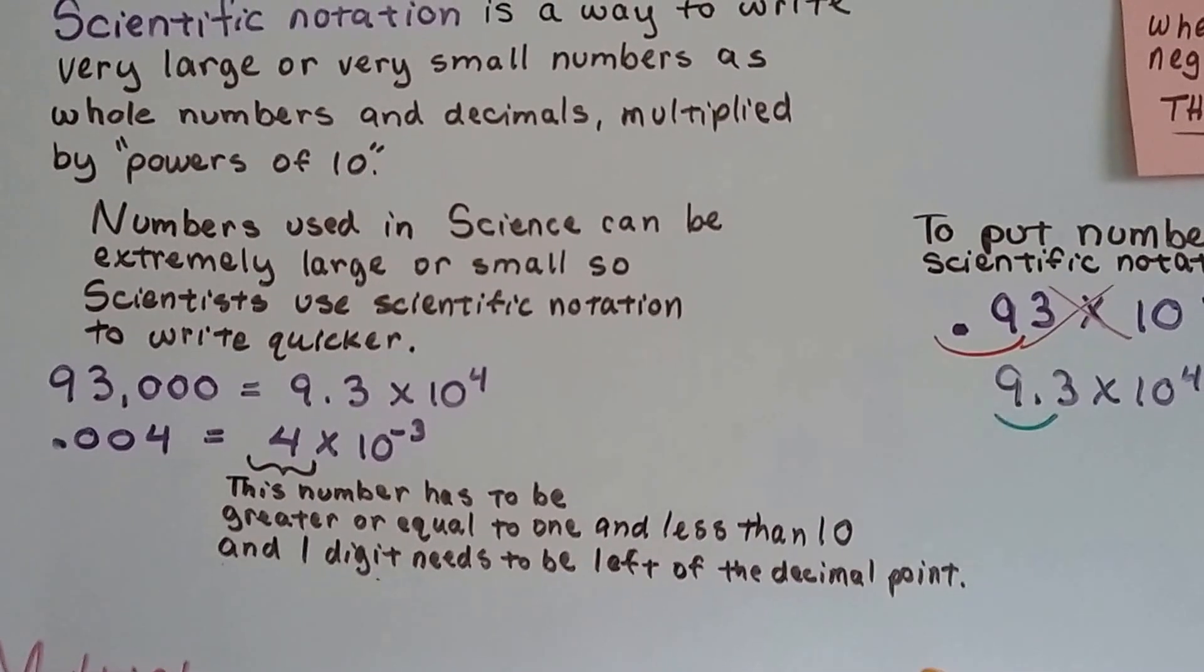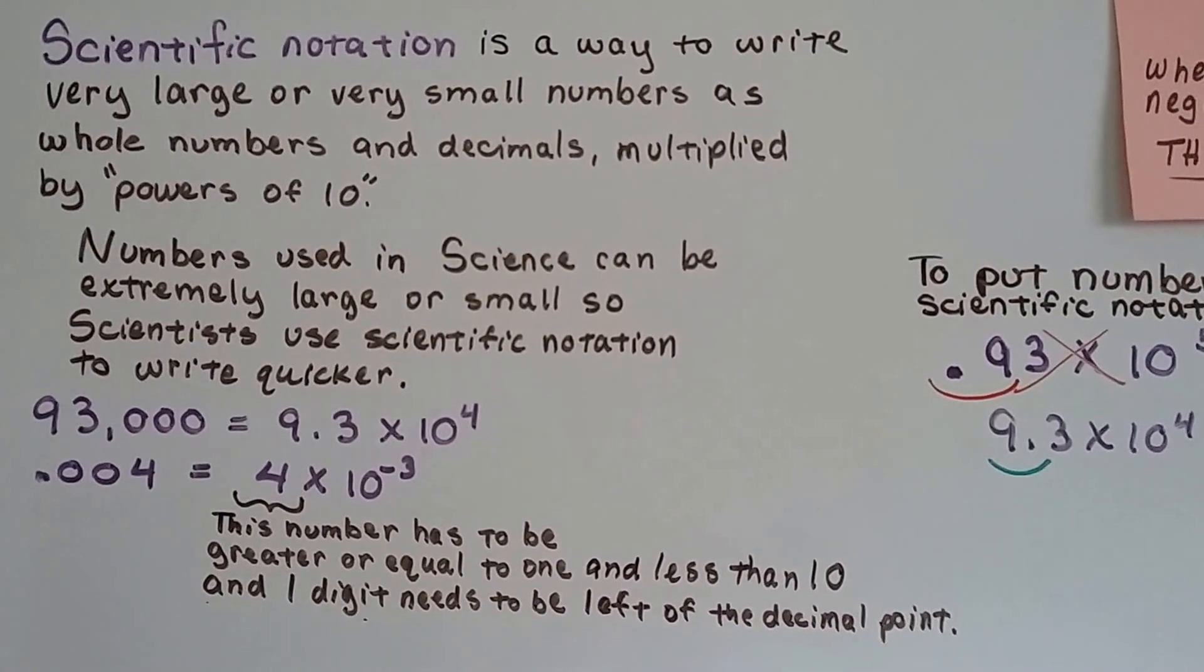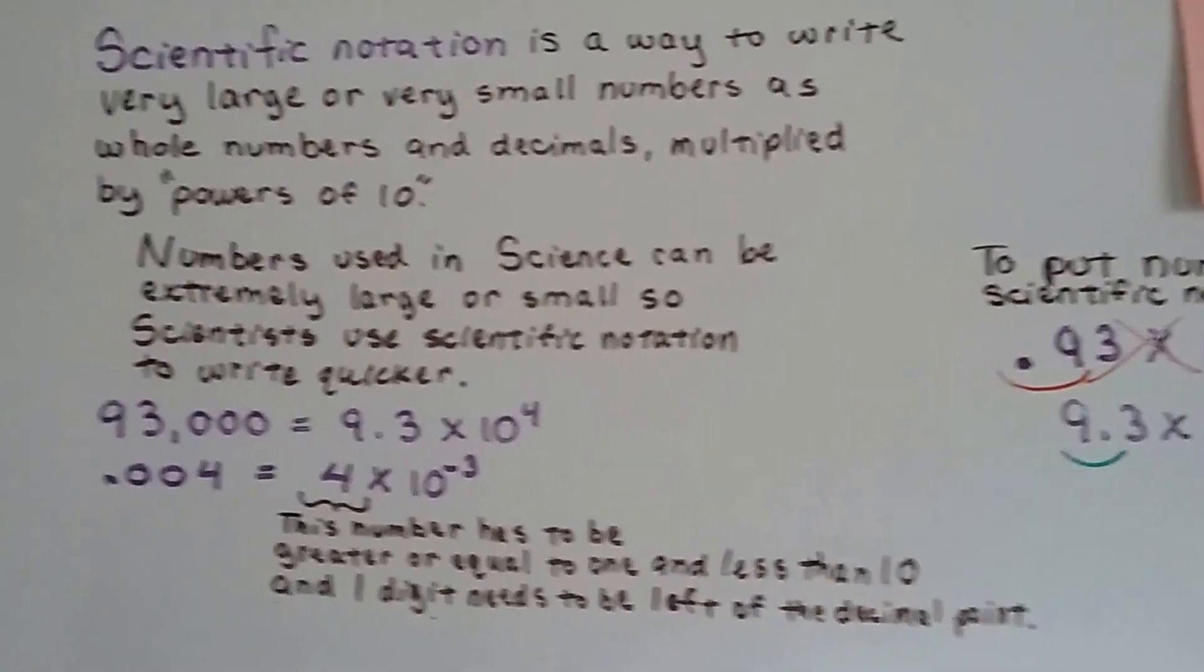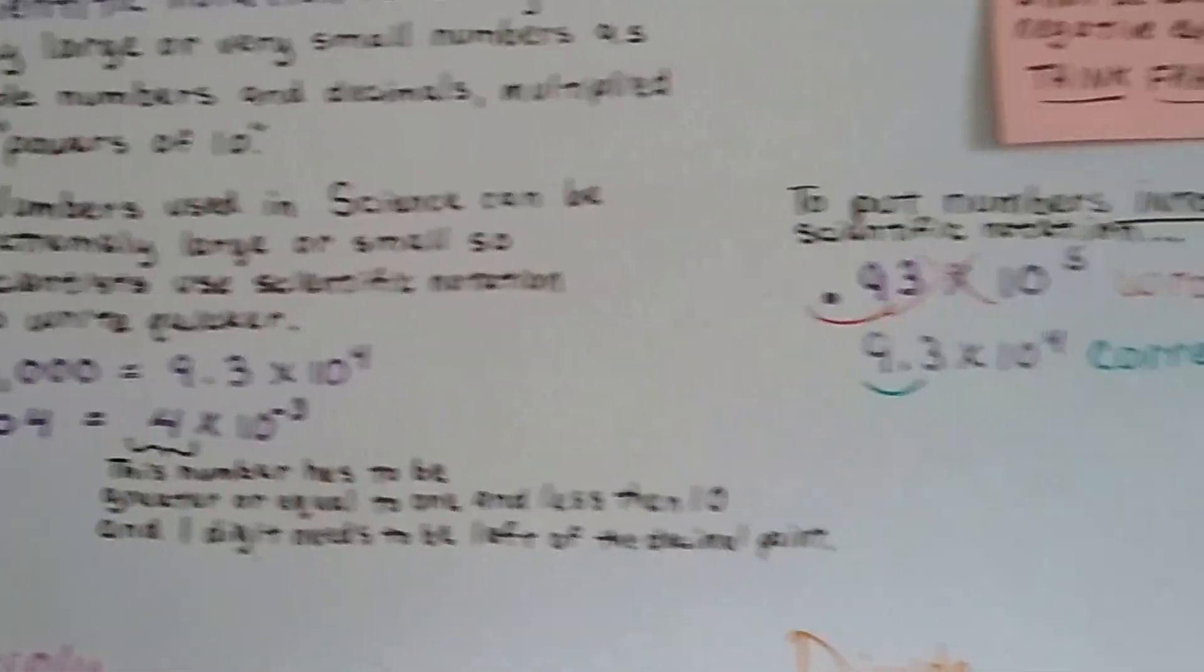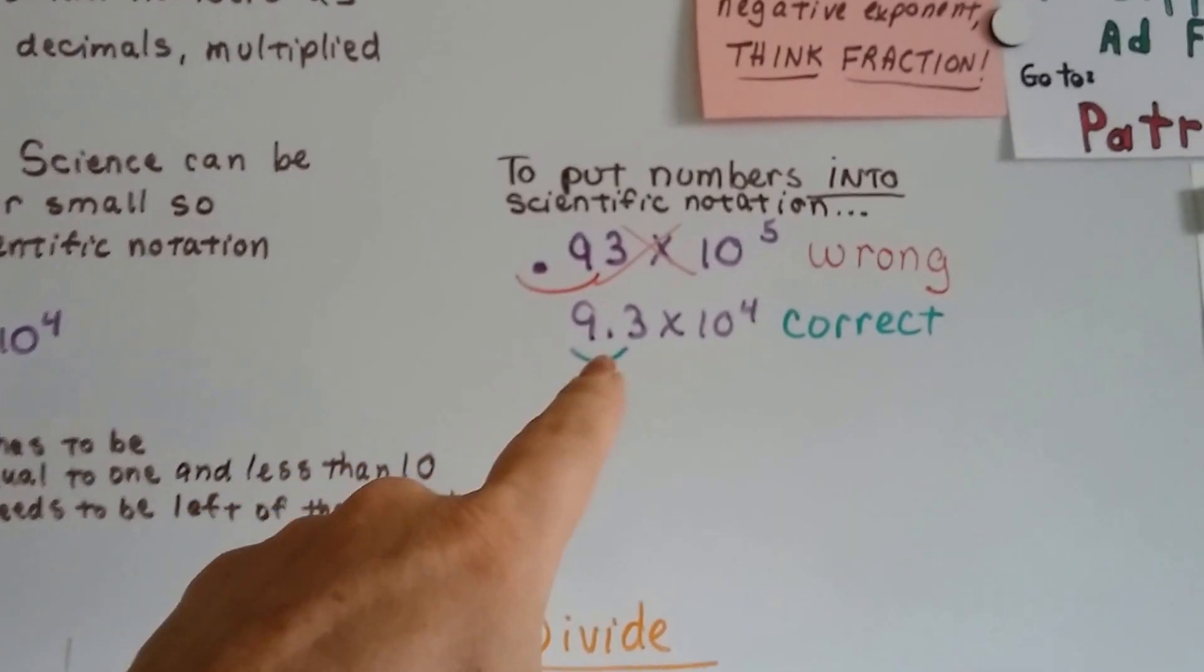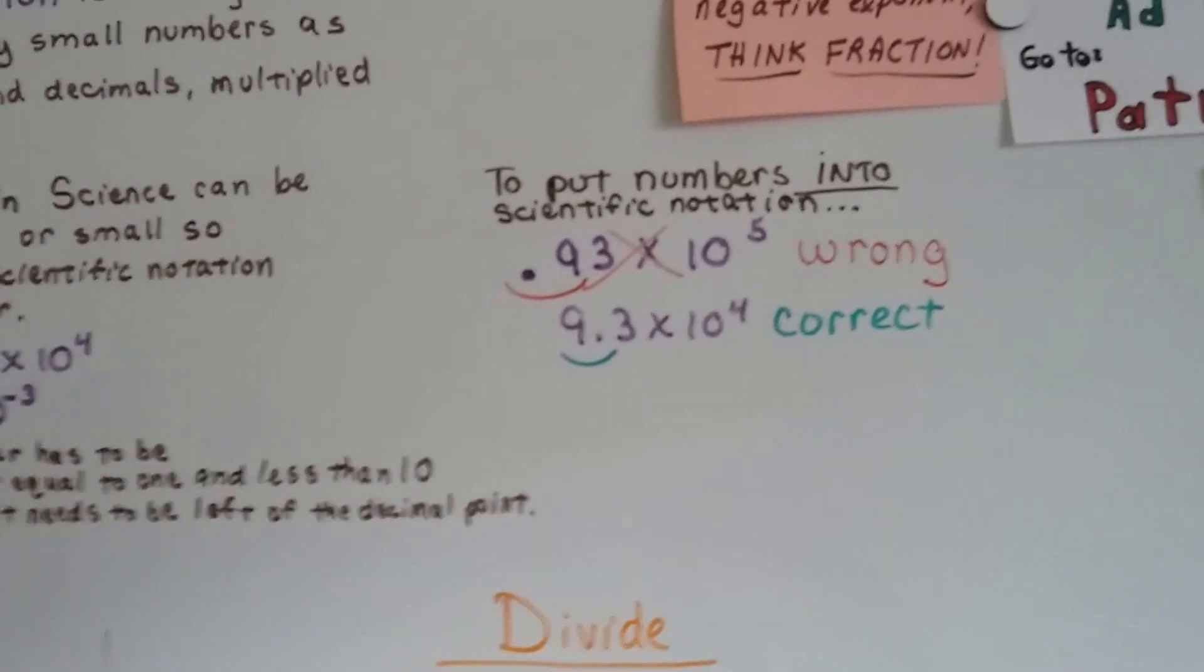If you're still confused, you need to go back a couple videos and watch my videos on scientific notation. We're in 2.4b, go back to 2.3 and then you'll learn all about this. And it says that we have to have at least one digit in front of the decimal for it to be correctly written in scientific notation.